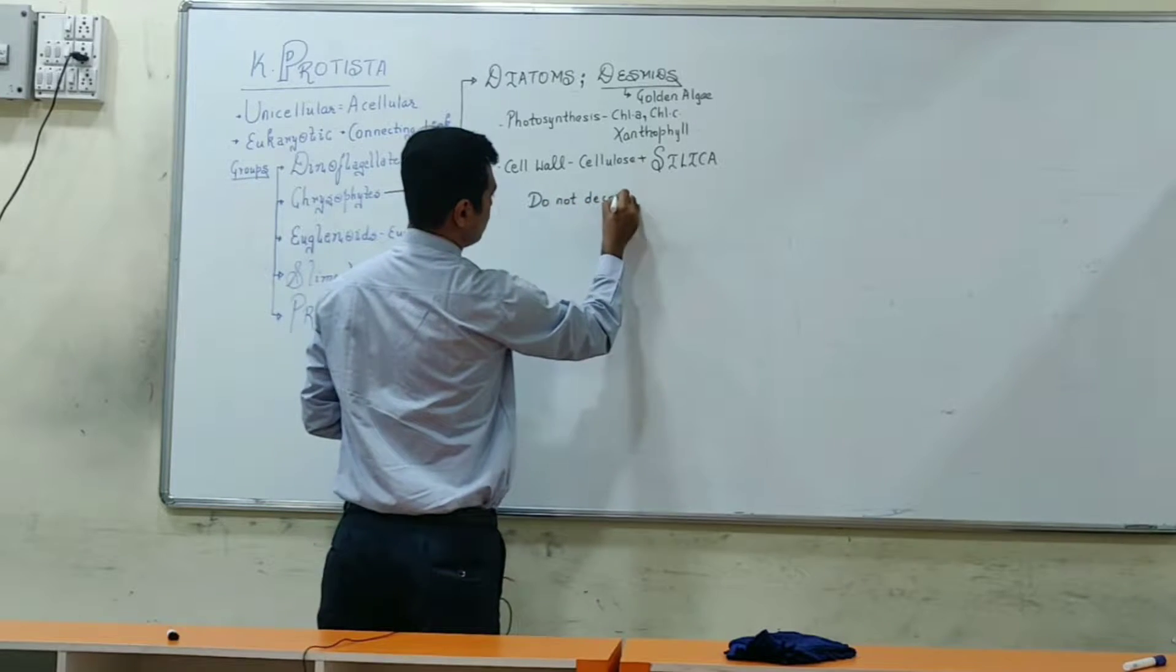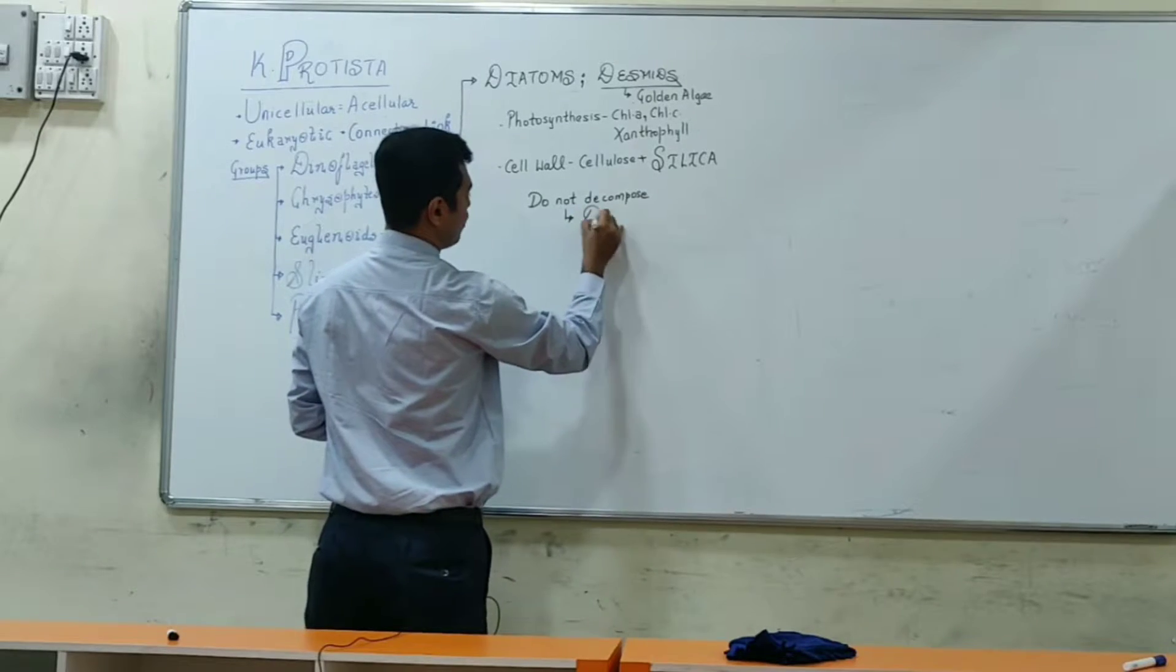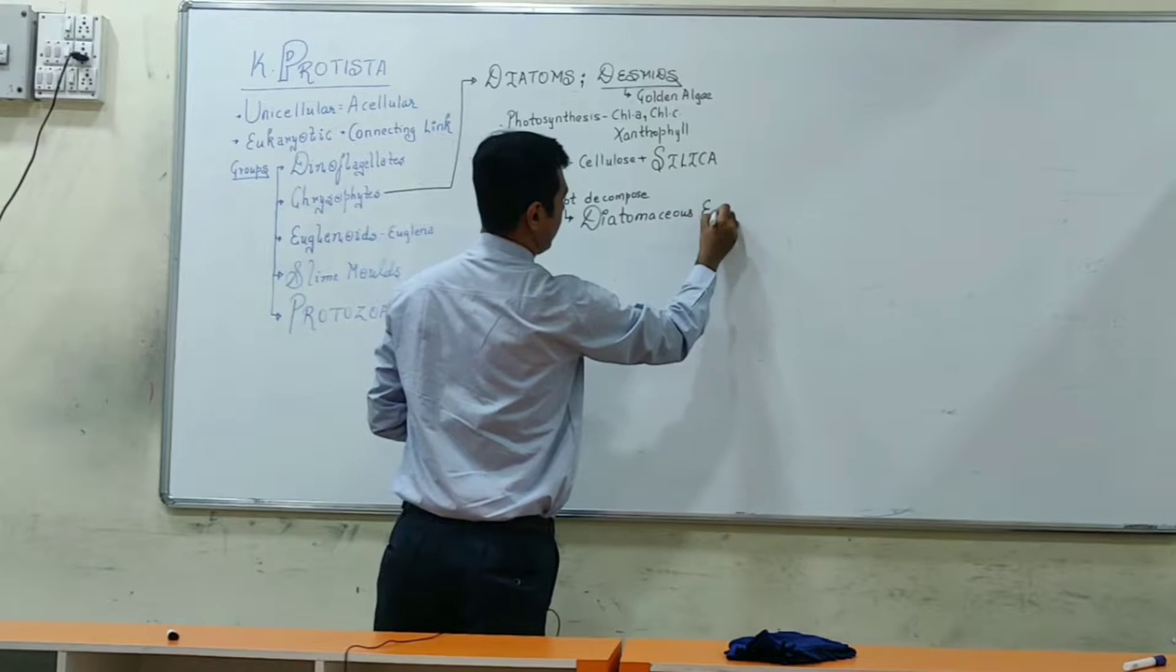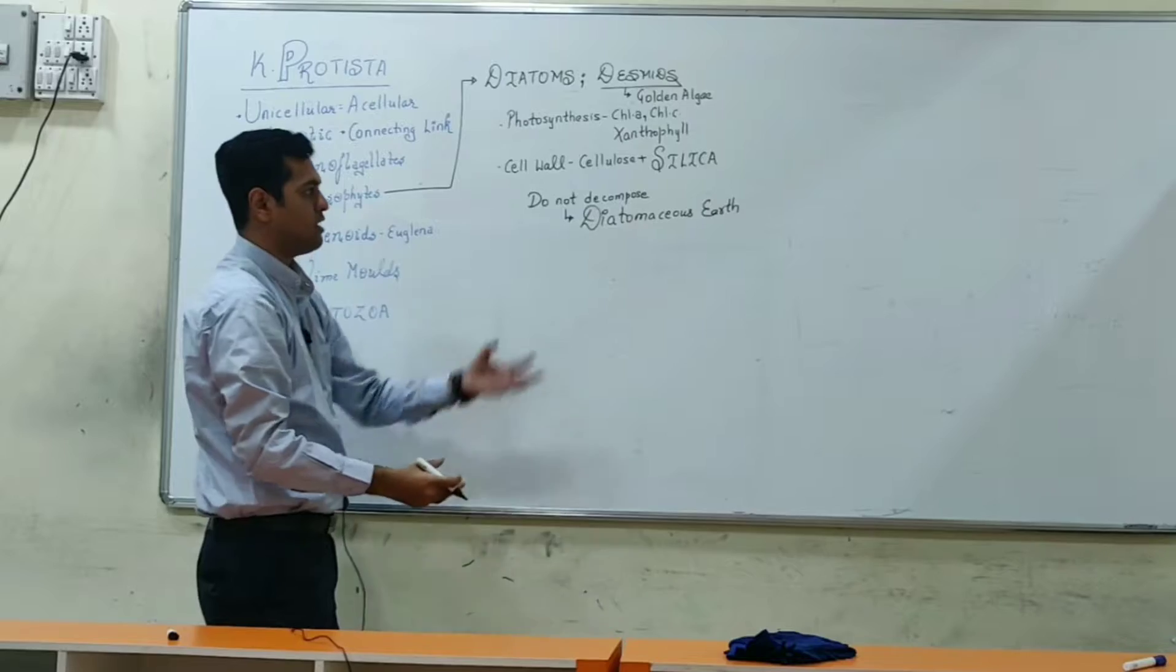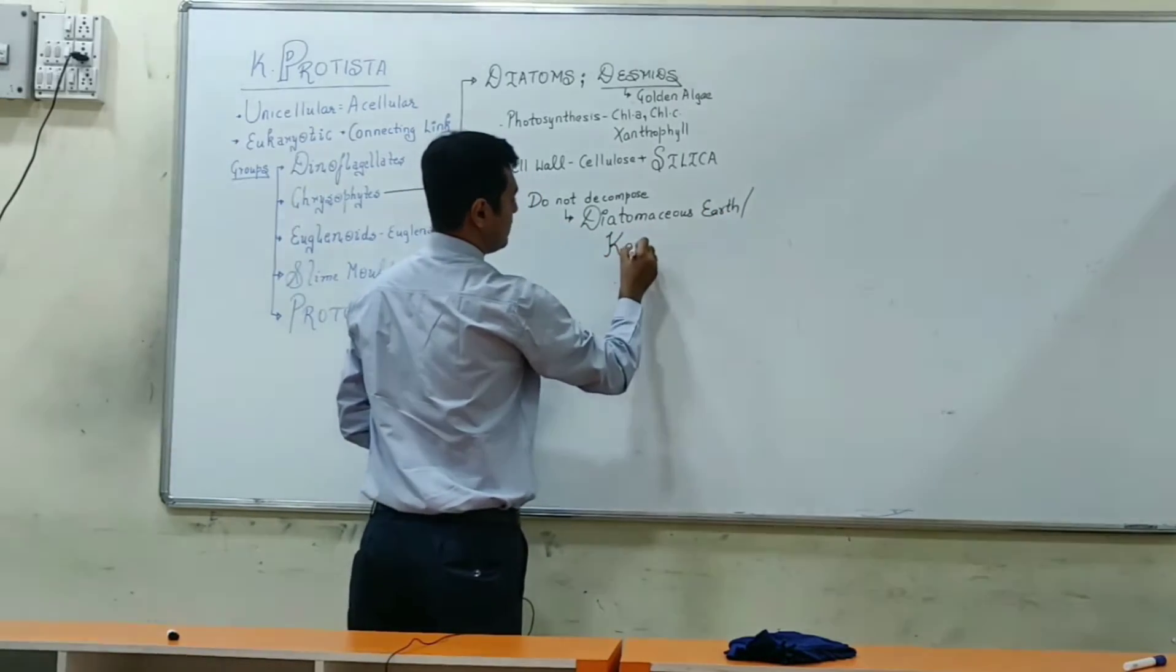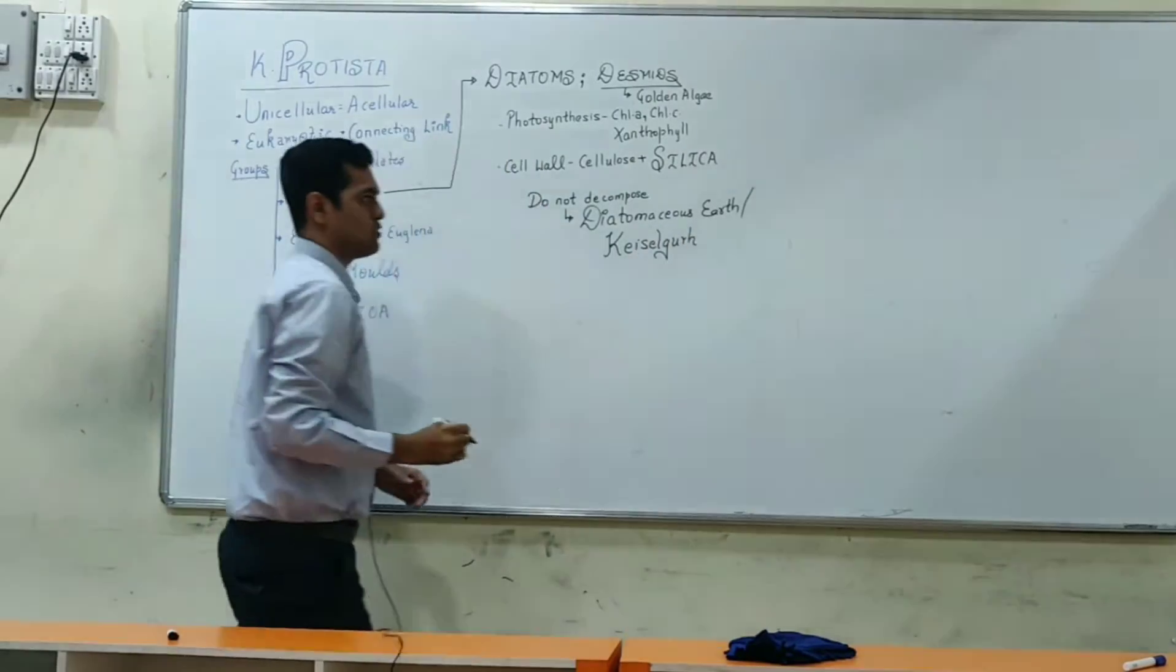Since they do not decompose due to the presence of silica, it leads to the formation of diatomaceous earth. When they die, they collect at the bottom of the oceans, forming diatomaceous earth, also known as kieselguhr.